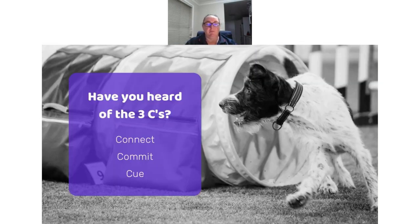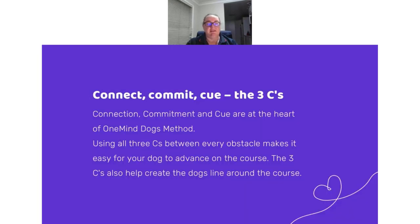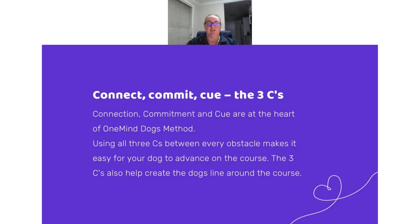I'm hoping all of you have heard of the three C's. What we mean by the three C's are connect, commit, and cue. The three C's are at the very heart of our One Mind Dogs method. It's what we do between every obstacle to make the course easy for our dog to read and help create the dog's line around the course. Between obstacles, I want you to think about first connecting with your dog, then committing the dog to the line and the obstacle you want them to take next, and cueing where they're going next. If you can do that between every obstacle, your dog shouldn't have any questions about where they're going on the course — meaning they're able to read the line you want to create.